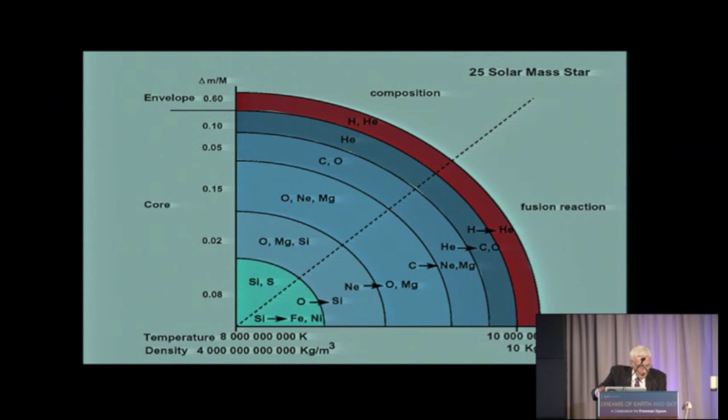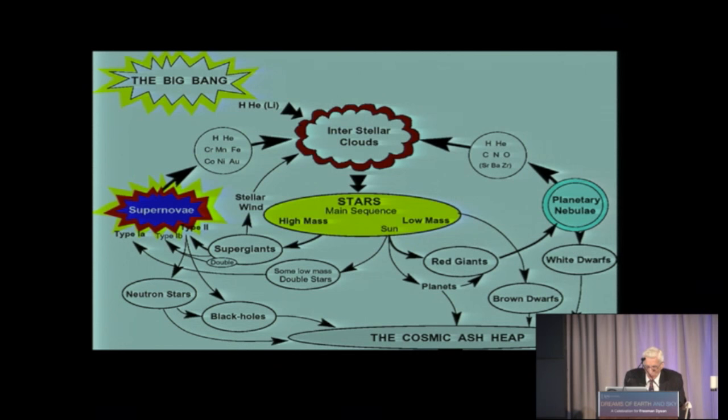Just before this supernova exploded, a slice through it would look like this. Onion skin structure with the hotter inner layers processed by nuclear fusion up the periodic table. And the material is then flung out into space. And this is important because this is relevant to the origin of the atoms which made the stars. And we now know that all the atoms that we are made of were produced in ancient supernova which exploded, their materials recycled into new stars.